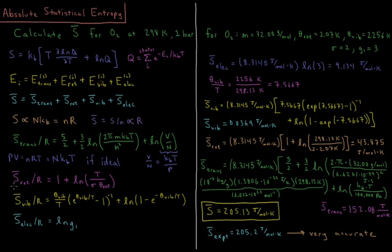For the rotational part, for a diatomic molecule, S bar rot over R is going to be 1 plus the natural log of the temperature over the symmetry number times the rotational temperature. For homonuclear diatomics like O2, the symmetry number is 2, and for heteronuclear diatomics it's 1. For polyatomic molecules, it's more complicated to figure out what sigma is. Theta rot is the rotational temperature, which we can either compute from the rotational constants or we can just look up in a table.